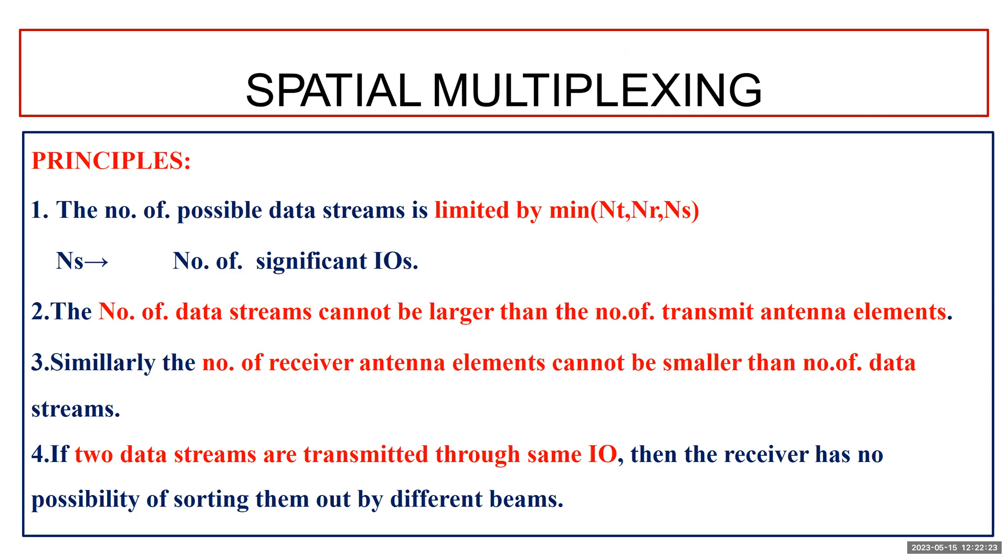This is how the principle is explained: the number of possible data streams will be limited by min(NT, NR, Ns), where Ns is the number of significant IOs. The number of data streams cannot be larger than the number of transmitting antenna elements. Similarly, the number of receiving antenna elements cannot be smaller than the number of data streams.